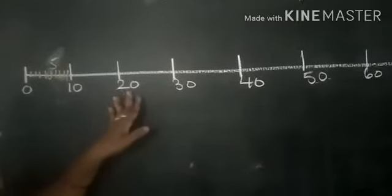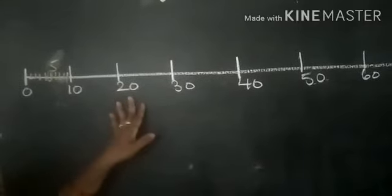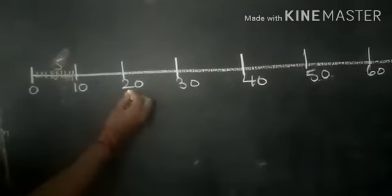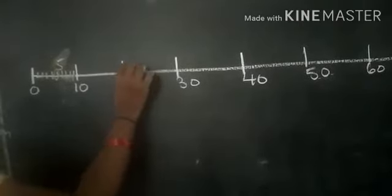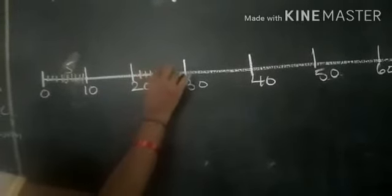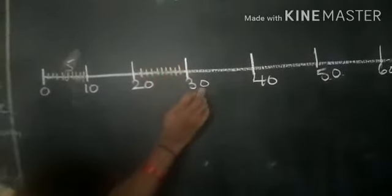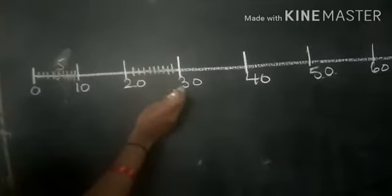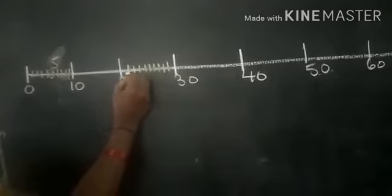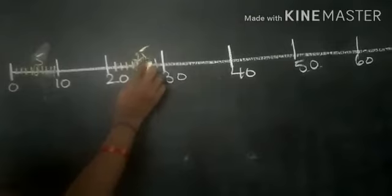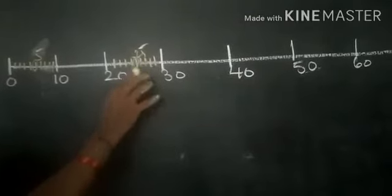In between 20 to 30, now I am going to show you. 20, 21, 22, 23, 24, 25, 26, 27, 28, 29, 30. In between this, now I am going to show you 25. 20, 21, 22, 23, 24, 25. This is the number line of 25.